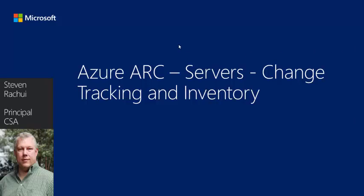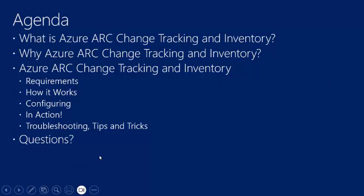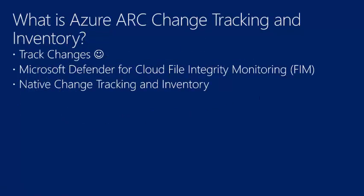With that brief background, let's get into change tracking and inventory. The agenda: what is this thing, why do we care about it, what are the requirements, how does it work — and let's actually configure it and watch what it looks like in my lab. Change tracking and inventory is a native Azure capability that you can extend to your non-Azure environment with Azure Arc. The assumption is that your servers have already been onboarded to Azure Arc. Once you do that, you can enable change tracking and inventory.